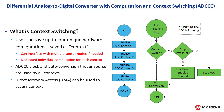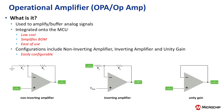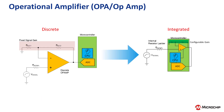Two operational amplifiers, or op-amps, are integrated into the PIC-18 Q71 family of microcontrollers. Op-amps are frequently used to buffer or amplify signals from sensors, current shunts, and resistive dividers. The op-amp peripheral is commonly implemented in three modes: non-inverting amplifier, inverting amplifier, and unity gain. The op-amp peripheral can be integrated with the ADC to condition or amplify a signal before measurement.